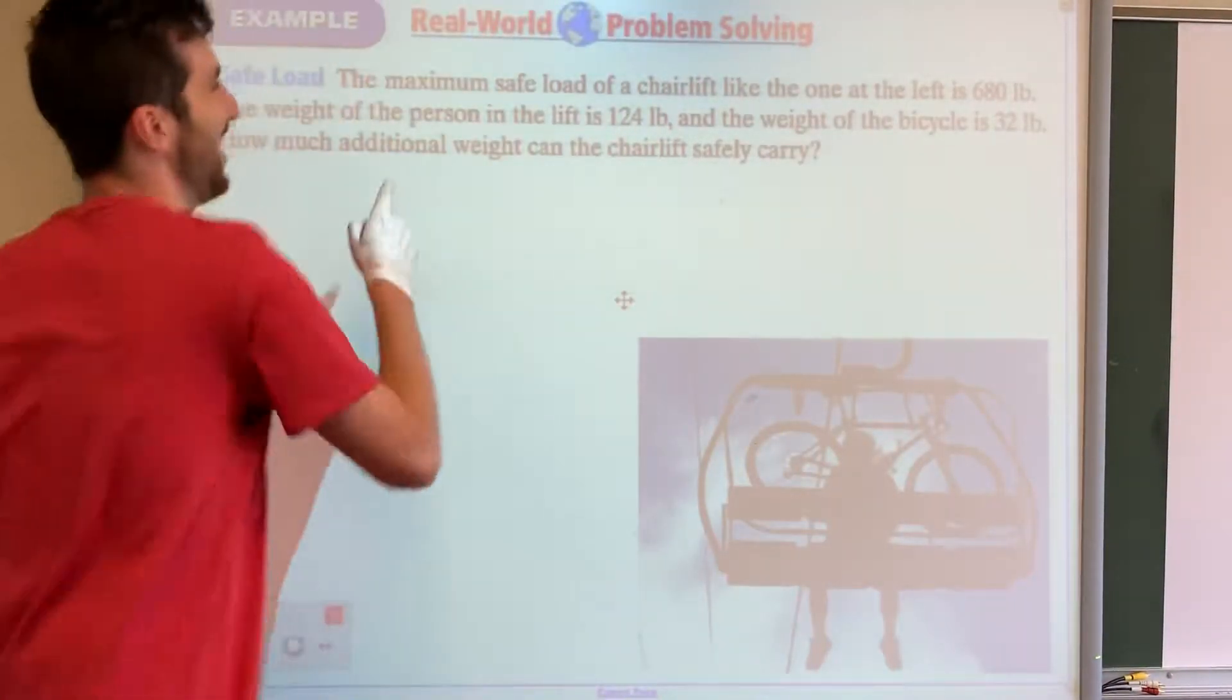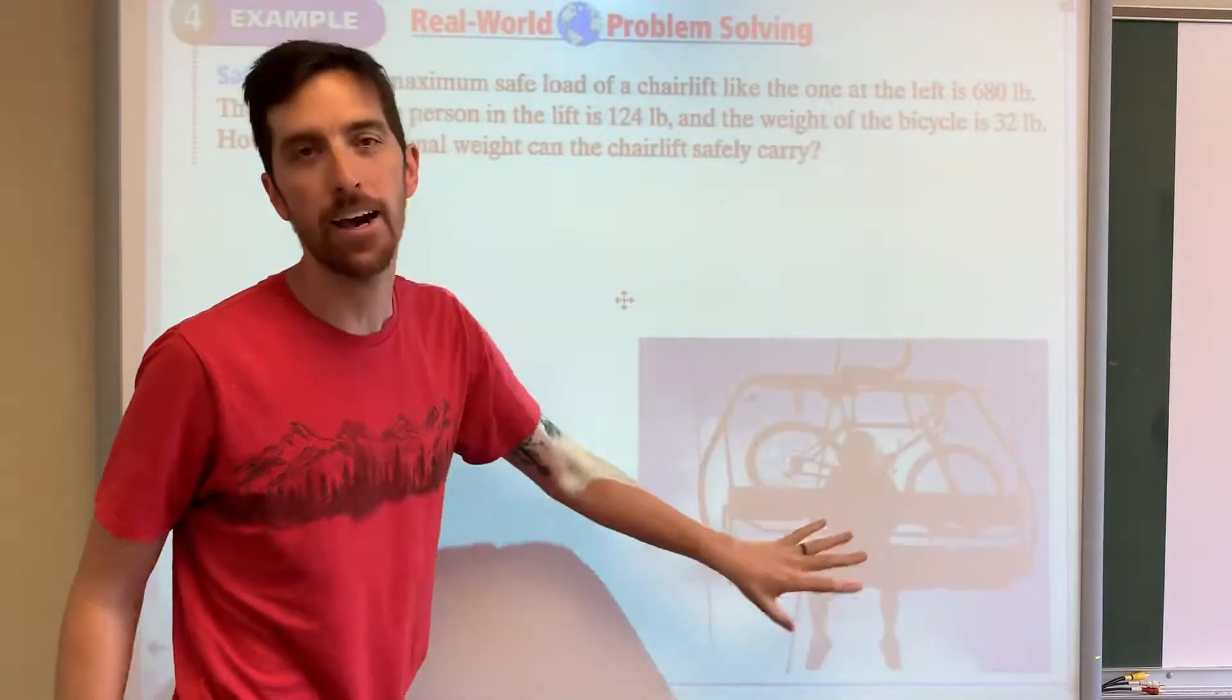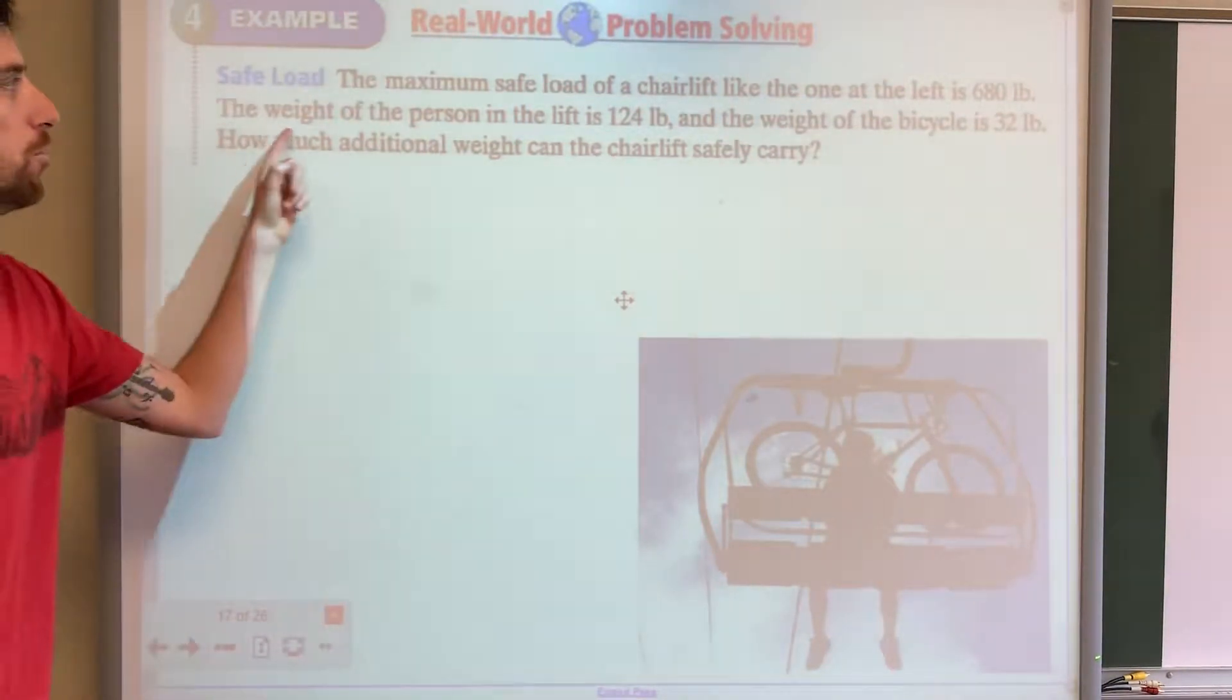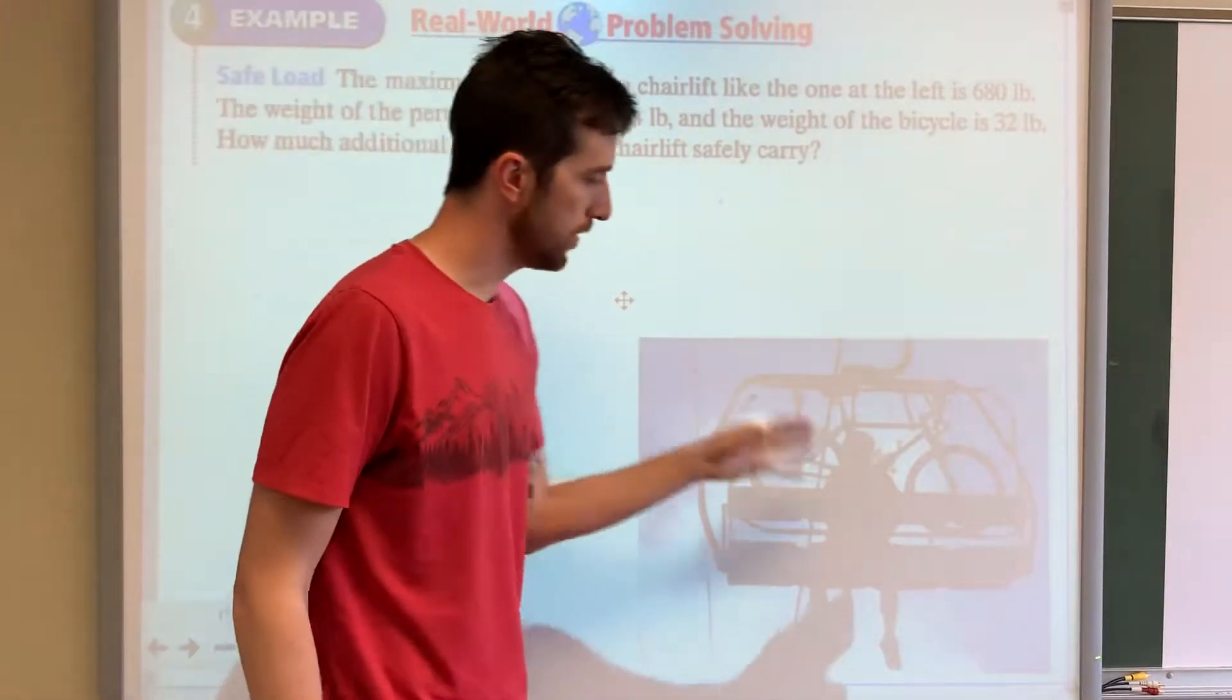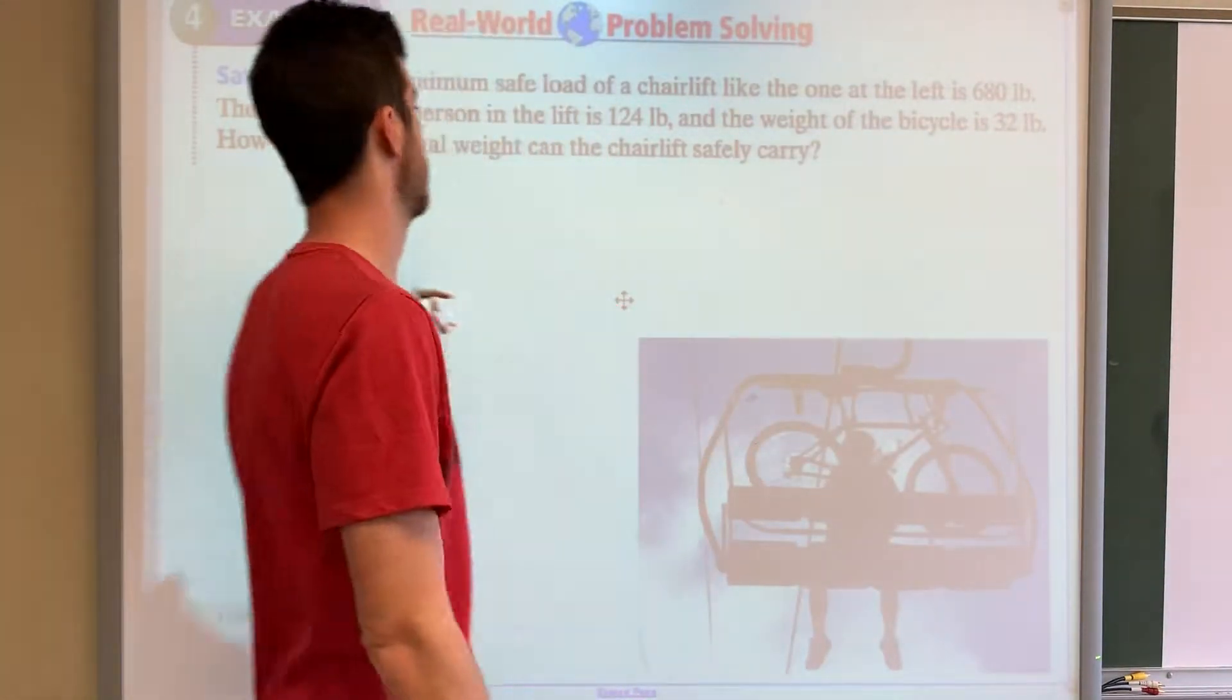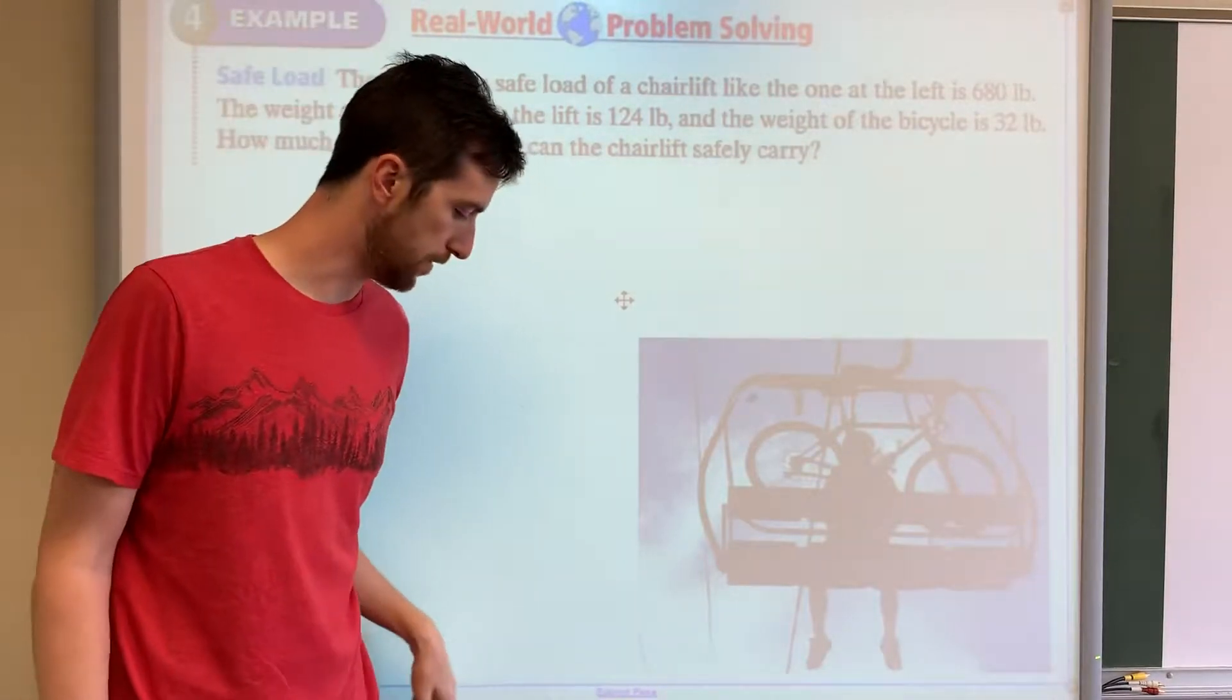Word problems! The maximum safe load of a chairlift like the one at the left, I put it at the right, is 680 pounds. The weight of the person in the lift is 124 pounds, and the weight of the bicycle is 32 pounds. How much additional weight can the chairlift safely carry?